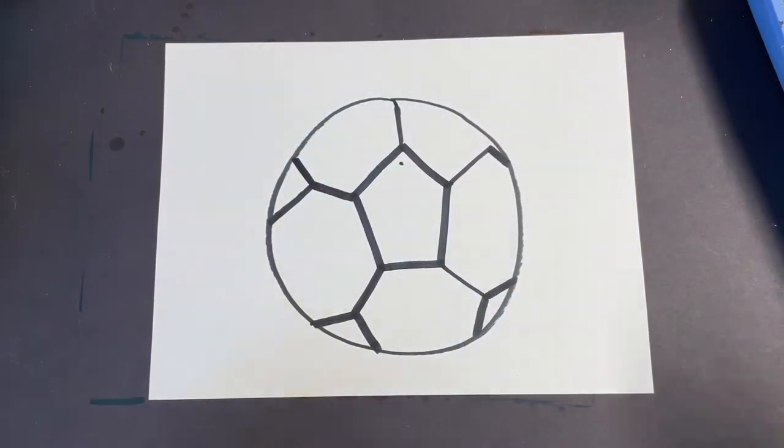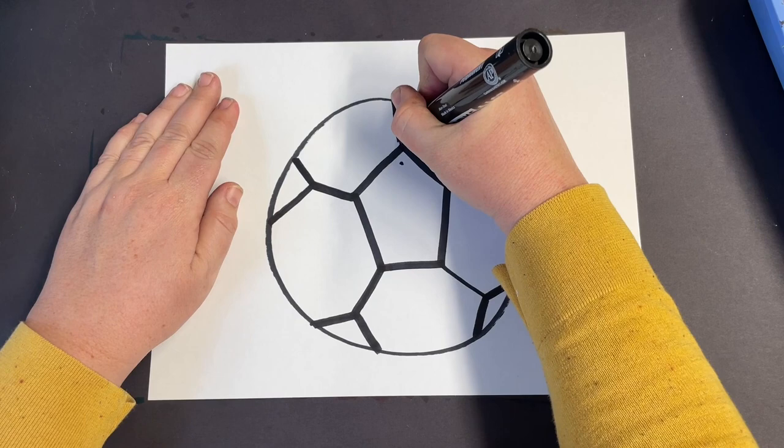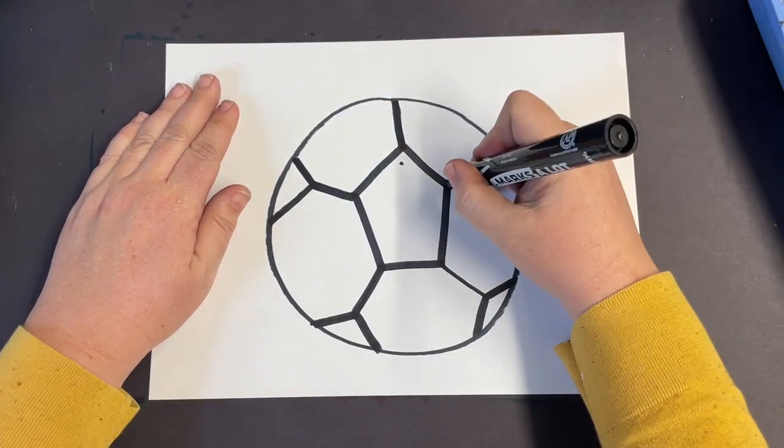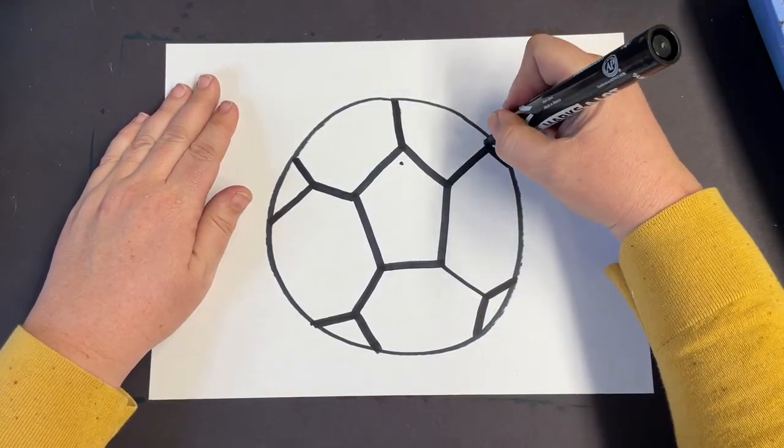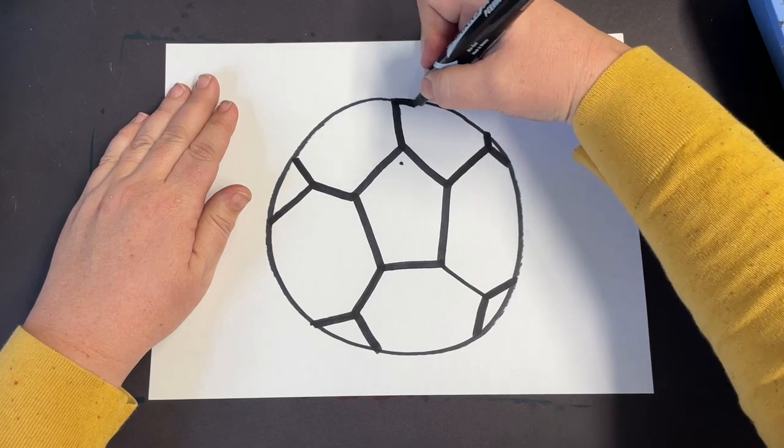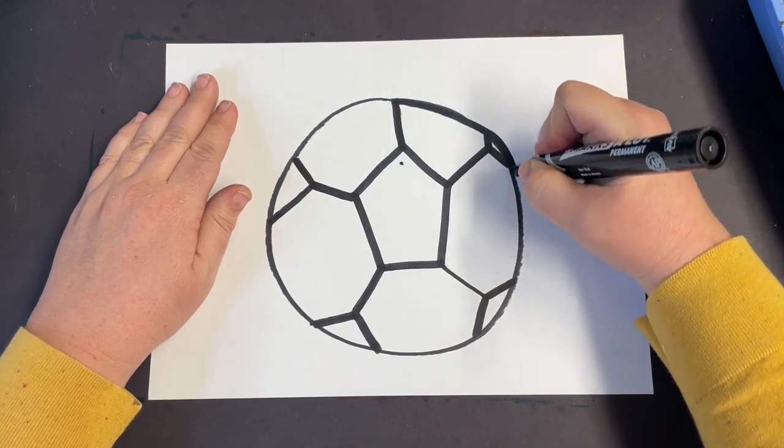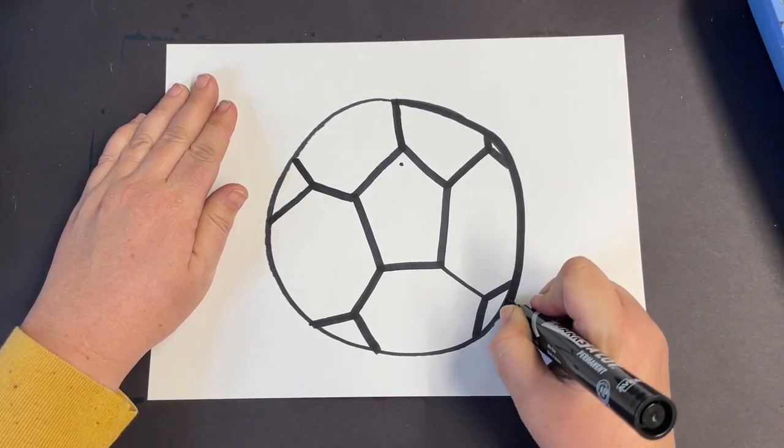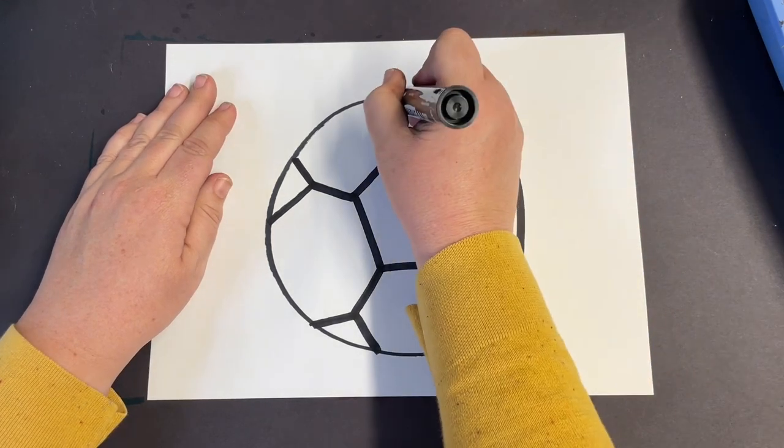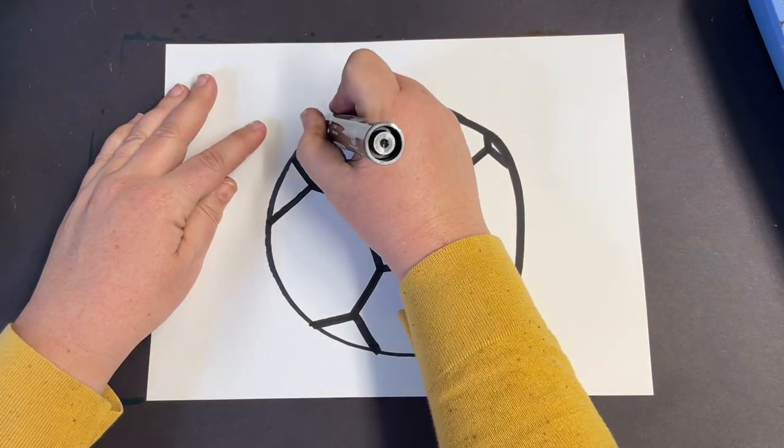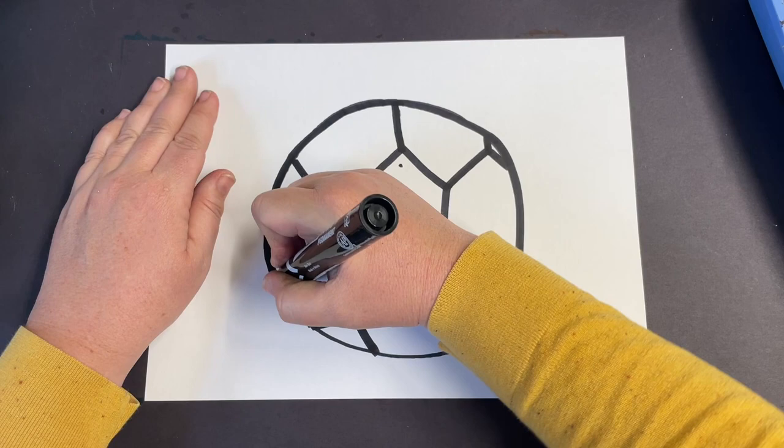And you might have some like this one up on top that gets so close to the edge that you don't even get that little extra pentagon peeking into the picture. And that's okay. Soccer balls, I think, are one of the trickiest things to draw just because of this very geometric pattern drawn on a round surface.